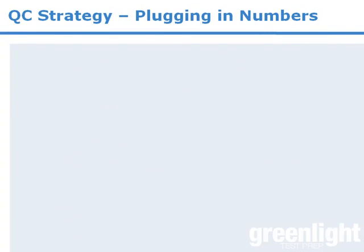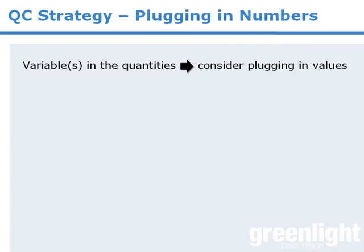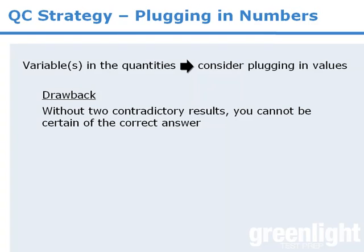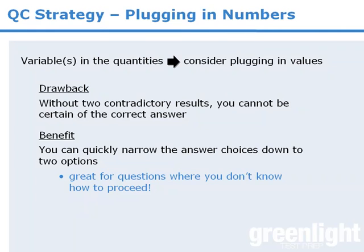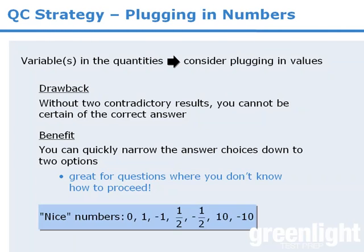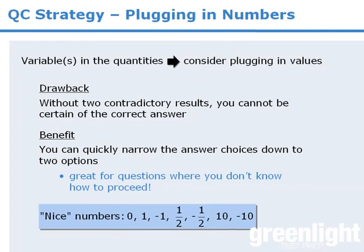OK, let's summarize. In this lesson, we learned that if there are variables in a quantitative comparison question, we might consider plugging in values. We learned the main drawback of this approach and the main benefit. And finally, we learned that if you do plug in values, be sure to use a nice cross section of numbers.